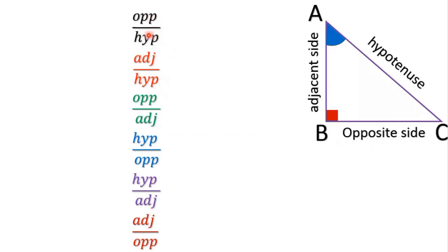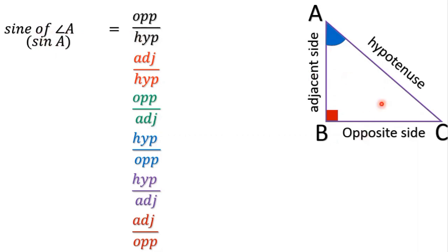In trigonometry, each ratio has been given a special name. The ratio of opposite by hypotenuse is called sine of angle A. In the figure, the opposite side is BC and the hypotenuse is AC. So opposite by hypotenuse is equal to BC by AC.